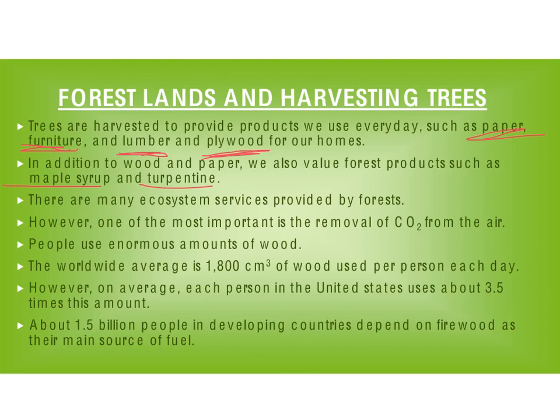But one of the biggest jobs a forest does for us is it removes carbon dioxide, which to us is poisonous. If you were to go into a room where there was only carbon dioxide, you would die, because you need oxygen to live. Your body uses oxygen in cellular respiration, produces carbon dioxide, and you breathe that out. The plants take in this carbon dioxide and convert it back into oxygen during photosynthesis.